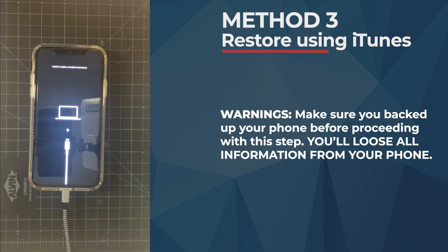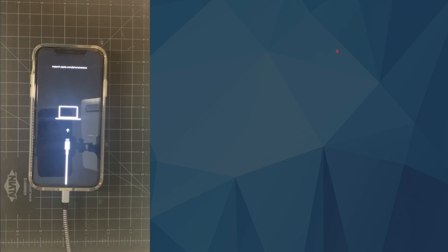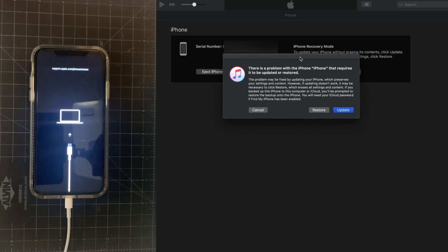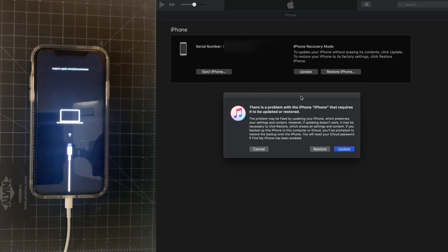The final method is very simple. We are going to do the same thing as in the second method. The difference is this time around, instead of clicking Update, we are going to click Restore. So same procedure — I make sure the phone is in recovery mode, and then I'm going to fast forward this process.